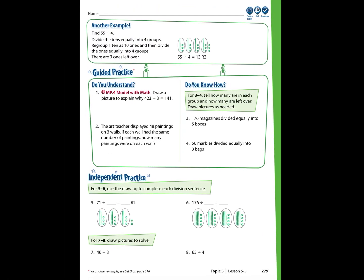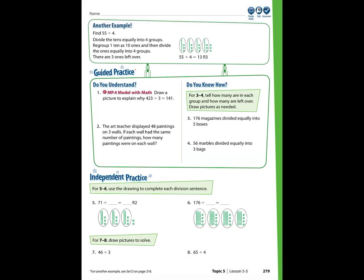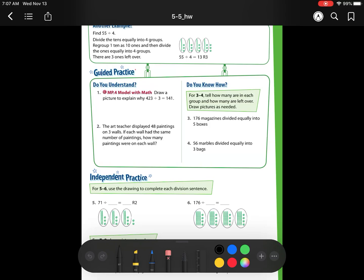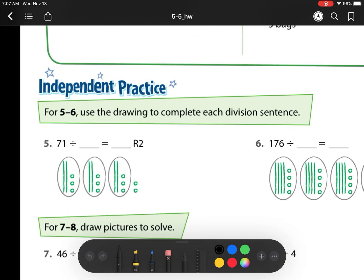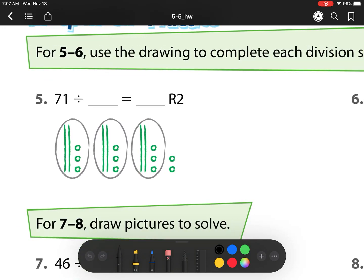Alright, so we are on lesson 5-5, continuing our division unit. Remember, we've already done the guided practice, so we will be looking at starting question number 5. So here, we have 71 divided by something equals something with 2 remainder. Well, I see my 2 remainder, my 2 leftovers are right here, so I know that part's right. And how many groups am I breaking up into? Well, I see there's 1, 2, 3 groups, so I'm breaking up into groups of 3.